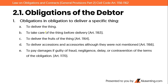Now the obligations of the debtor — starting with obligation to give a specific thing. There are five obligations: A) to deliver the thing; B) to take care of the thing before delivery, because if the specific thing is lost, there is nothing else to deliver. Under Article 1163, the required standard of care is the diligence of a good father of a family, or ordinary diligence.